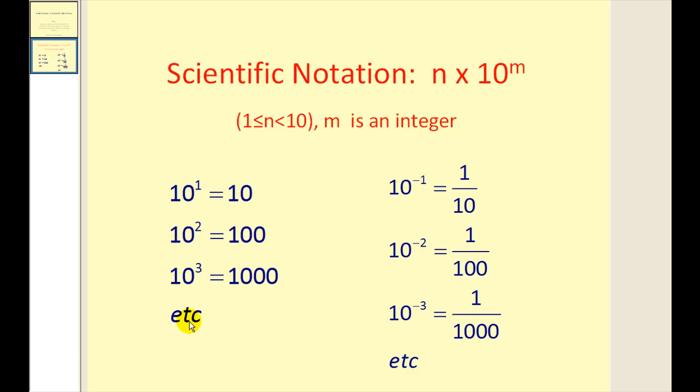If we can remember this, we don't have to memorize which way to move the decimal. Again, if it's a positive power on ten, the number is going to get larger, and if it's a negative power on ten, the number is going to get smaller.